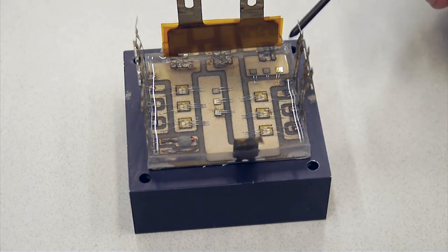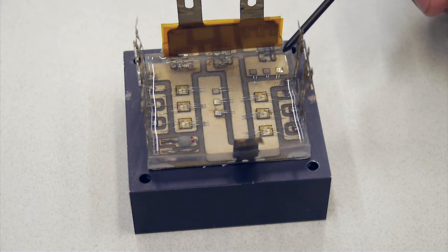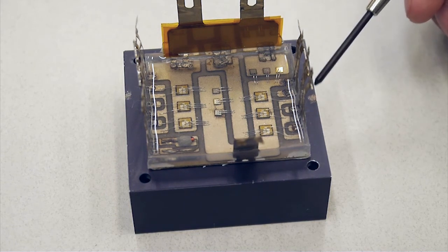The entire module is then encapsulated in this silicone material. This is to provide electrical isolation and chemical and mechanical support for the module. Then the module is mounted on the aluminum heat sink.